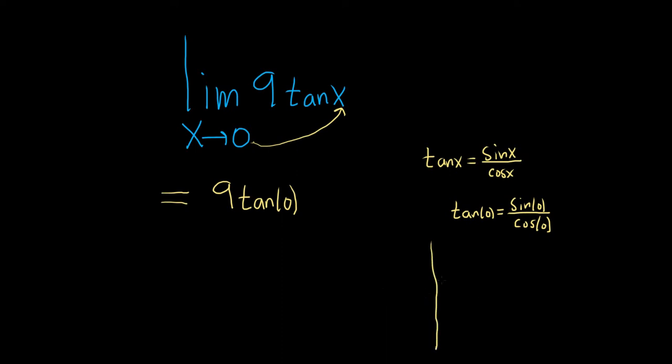On the unit circle, cosine is the x-coordinate, and sine is the y-coordinate. So at 0, we're here. And the ordered pair here is 1, 0.